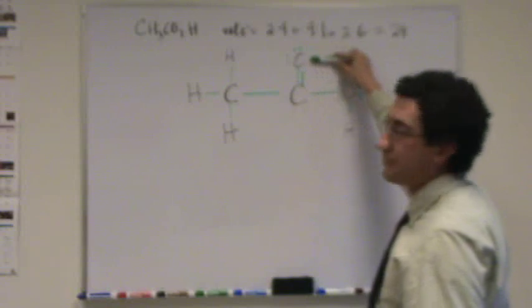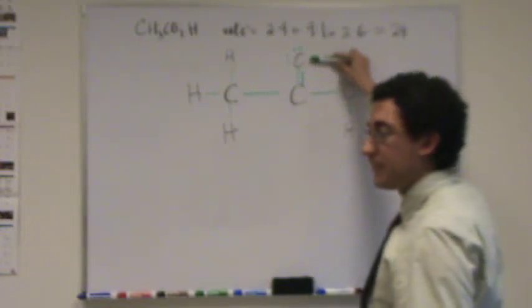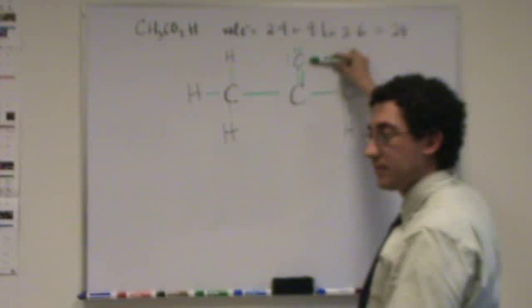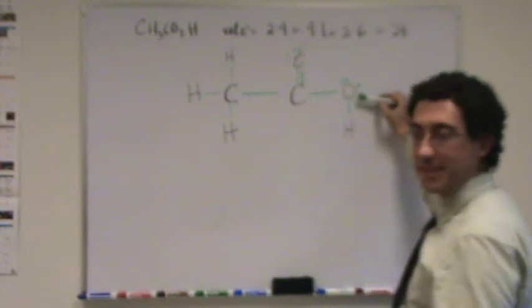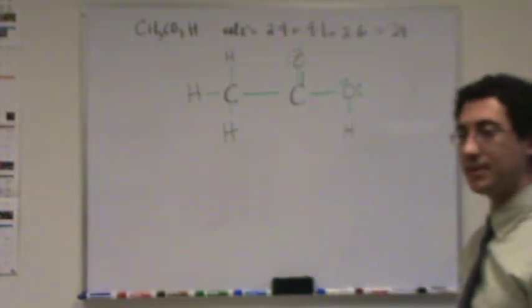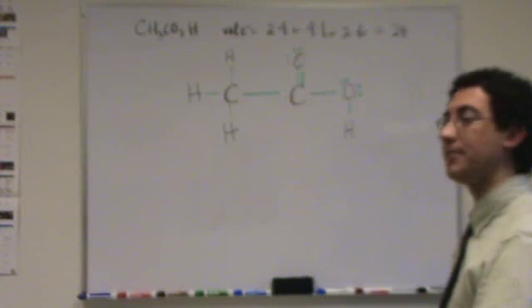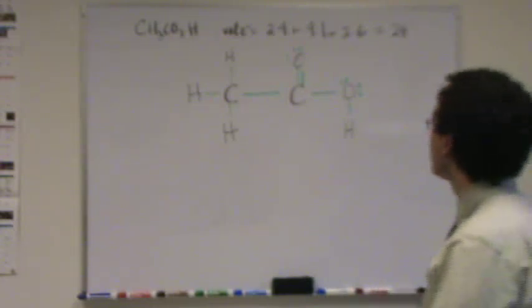How about oxygen? It's in what column? Six. And it has one, two, three, four, five, six. That one's okay. This one also has six. Everything is neutral. And that's very common in organic. The formal charges of everything is zero.